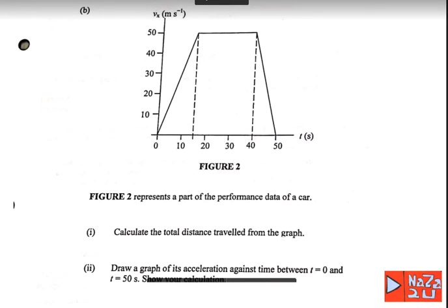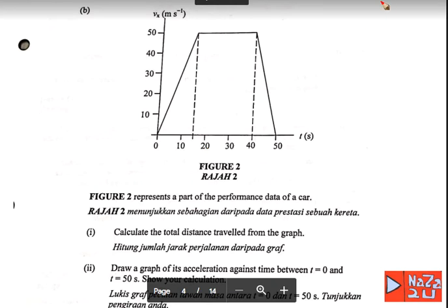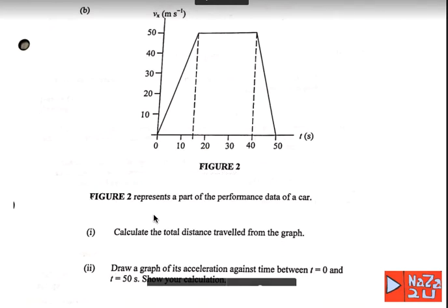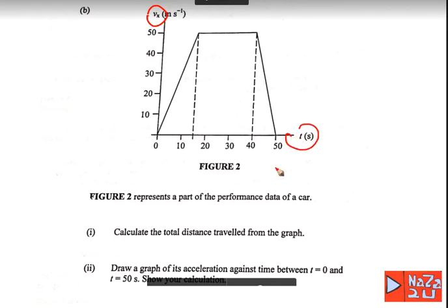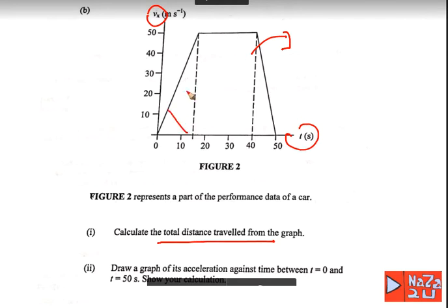Continuing to part B: the figure shows part of the performance data of a car. This is a graph of V versus time T, with maximum velocity 50 meters per second. Number one: calculate the total distance travelled. For a V versus T graph, the total distance is the area under the graph. Here, the area under the graph is a trapezium.